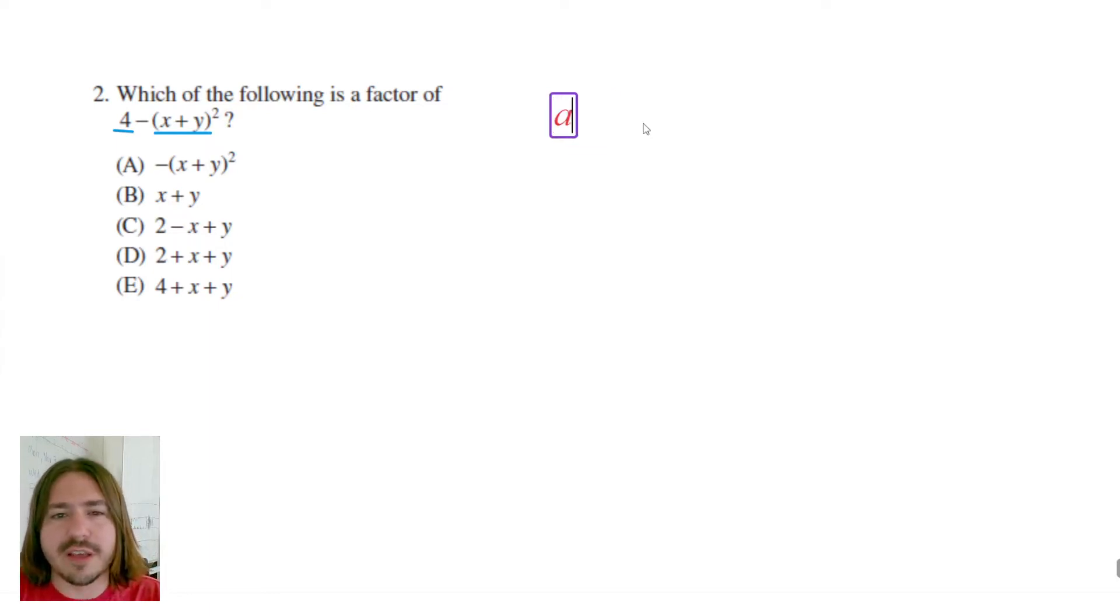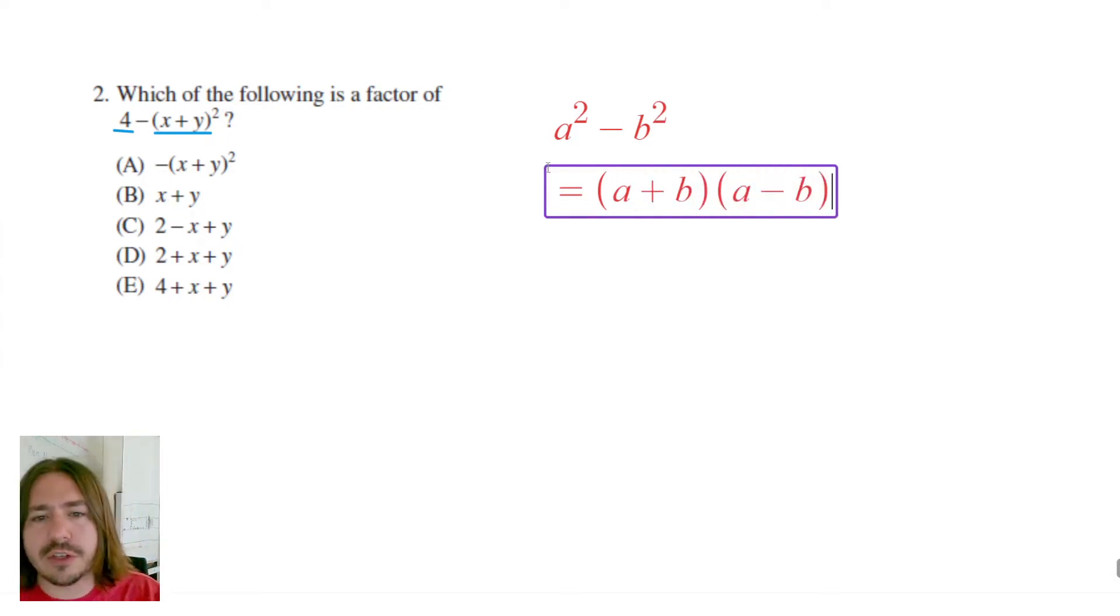In other words, expressions that take the form a² minus b² as follows: a² minus b² can be factored as (a+b) times (a-b). So the only thing to do here really is to try to interpret the expression that they gave us as a difference of two squares.